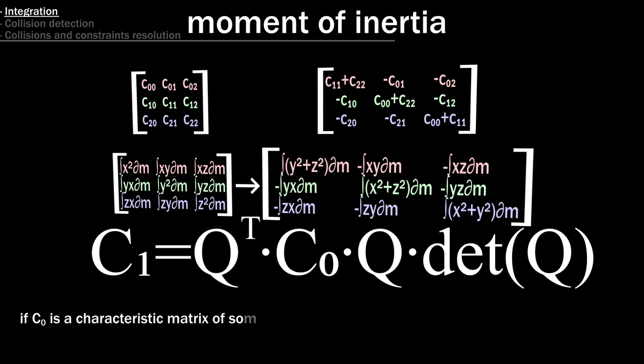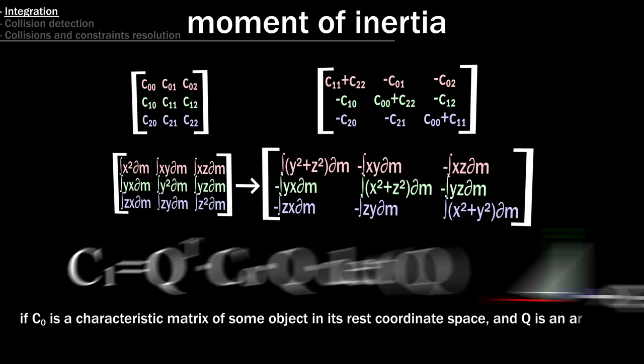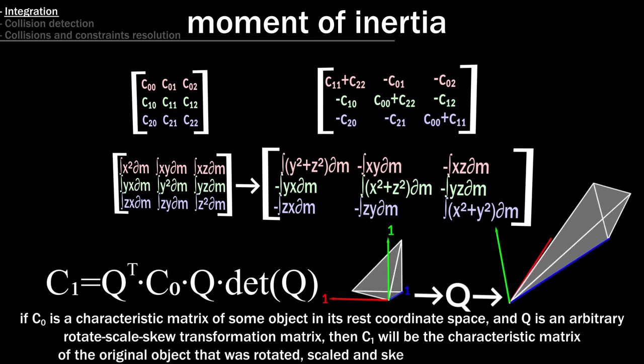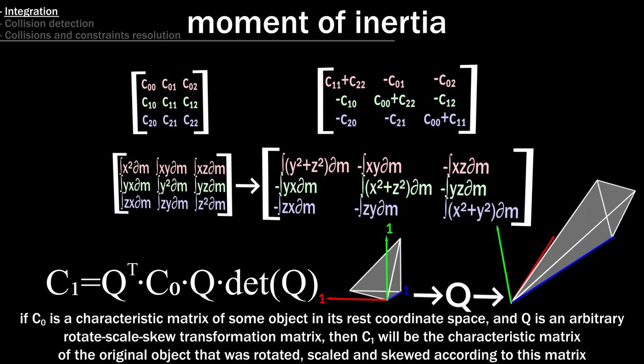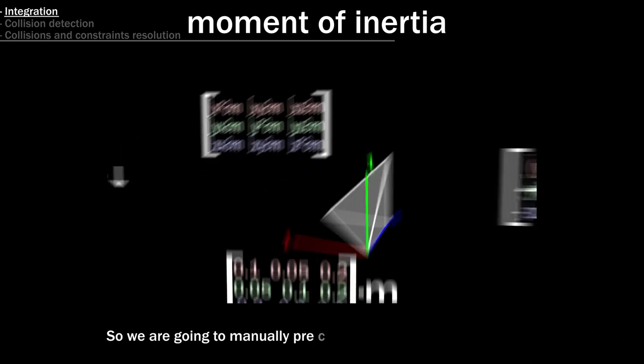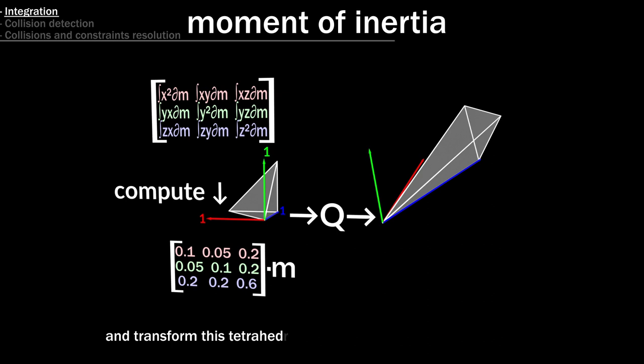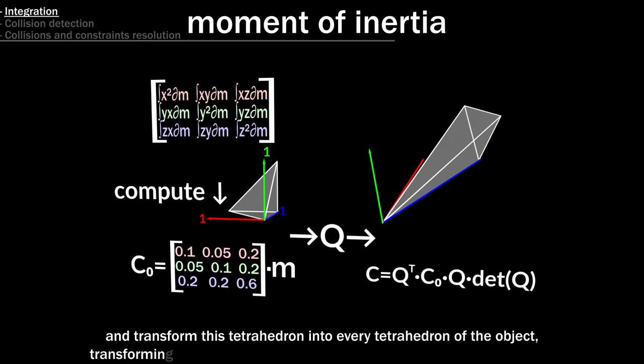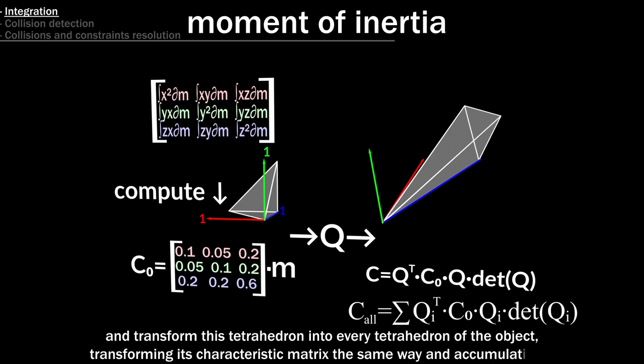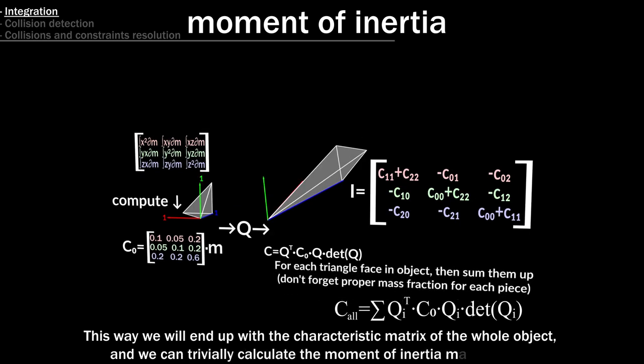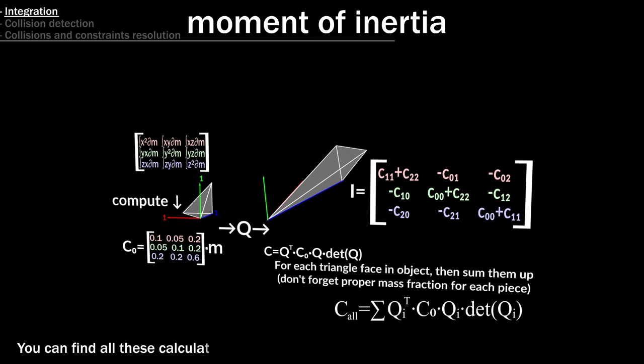If C0 is a characteristic matrix of some object in its rest coordinate space, and Q is an arbitrary rotate scale skew transformation matrix, then C1 will be the characteristic matrix of the original object that was rotated, scaled and skewed according to this matrix. So we are going to manually pre-calculate the characteristic matrix for this simple tetrahedron around origin, and transform this tetrahedron into every tetrahedron of the object, transforming its characteristic matrix the same way and accumulating it. This way we will end up with the characteristic matrix of the whole object, and we can trivially calculate the moment of inertia matrix from it. You can find all these calculations implemented in the create representation asset in Houdini.